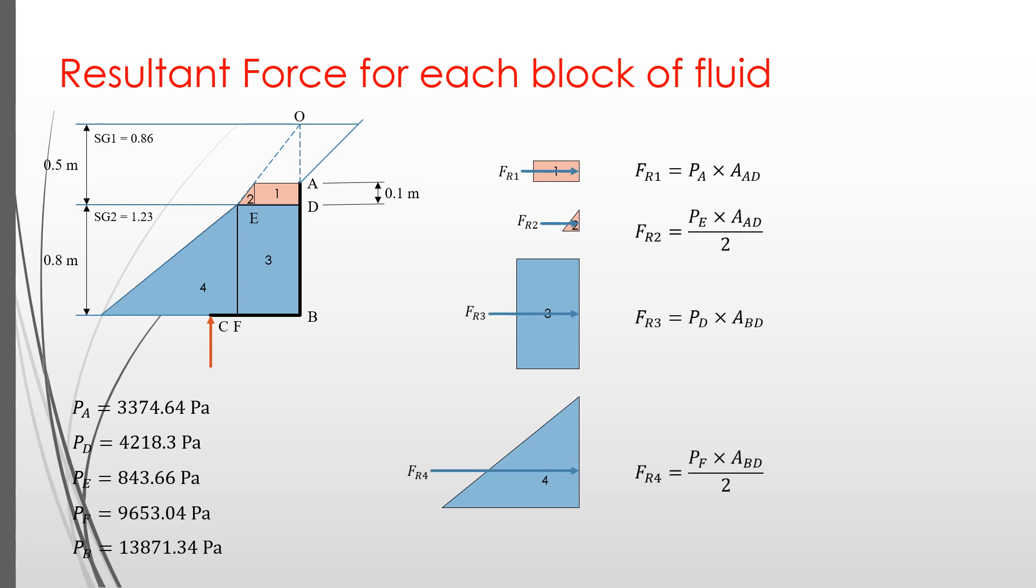For each of these shapes, we sum up the pressure distribution by taking into consideration the width of the gate, which is 2 meters. This is to obtain the resultant force, or total pressure, for each shape. FR1 is the resultant force for the rectangle 1. It equals the pressure PA times the area of surface AD. We can consider this value as the pressure volume of a box formed by PA and the area of the surface AD.